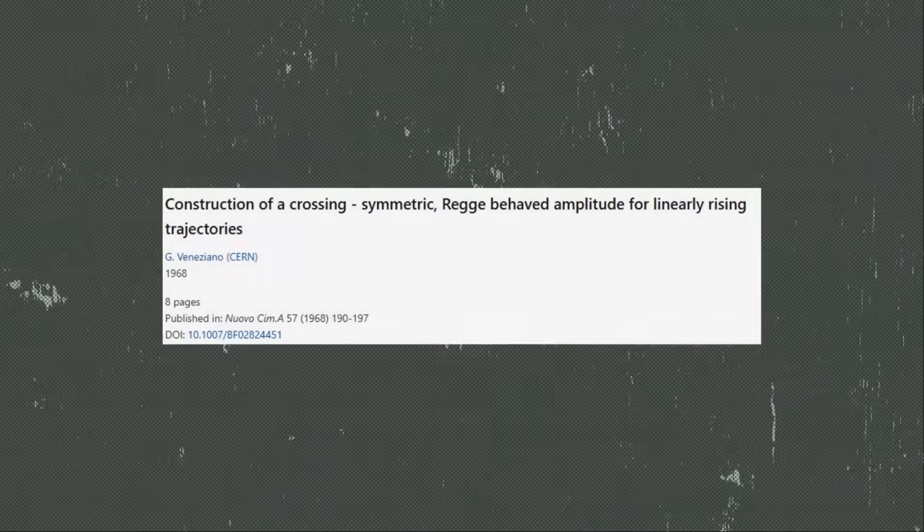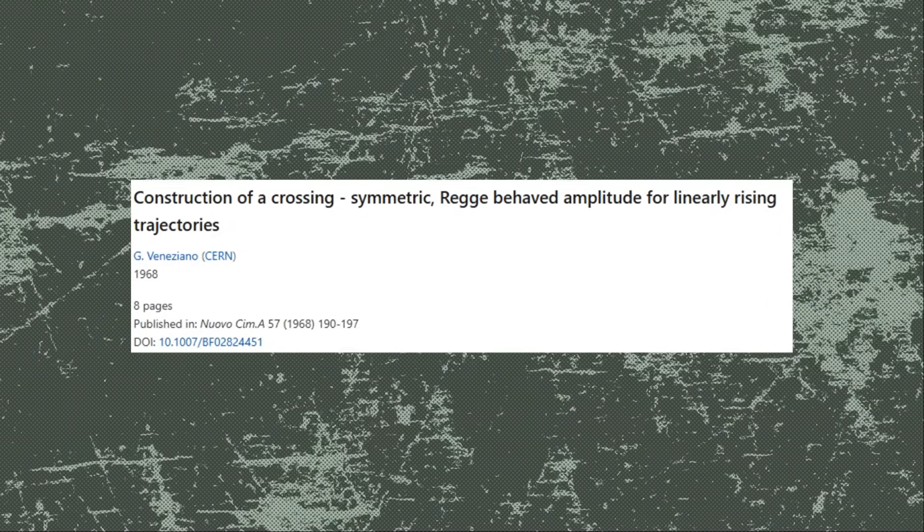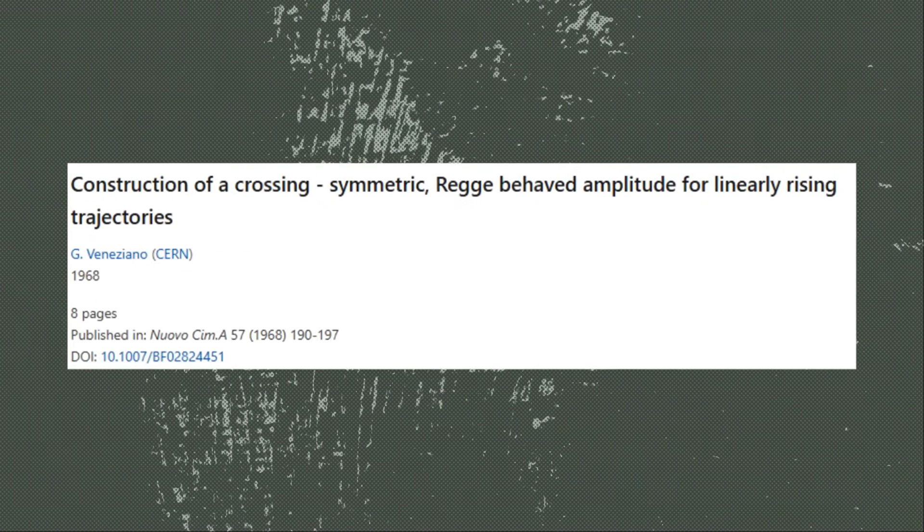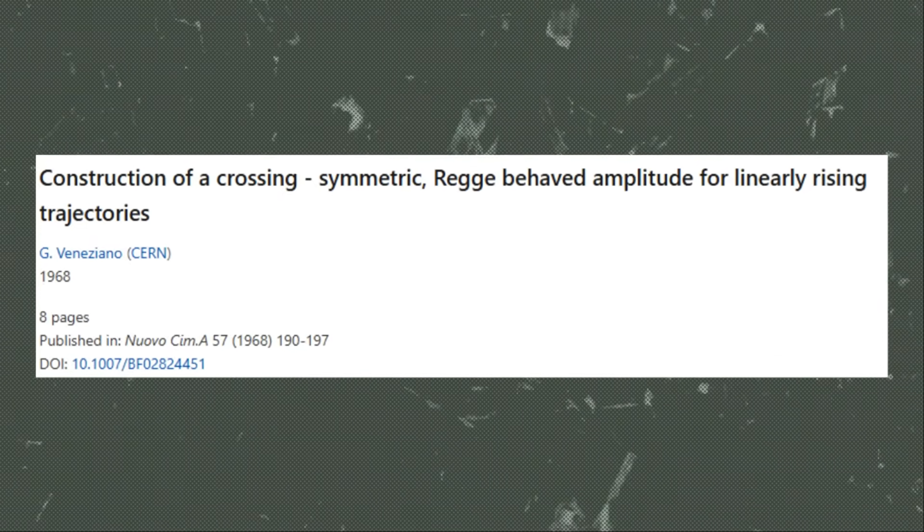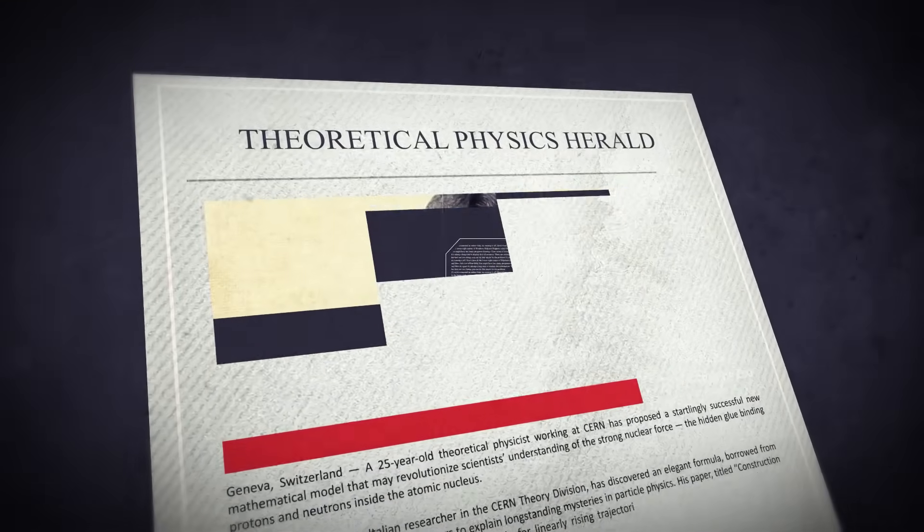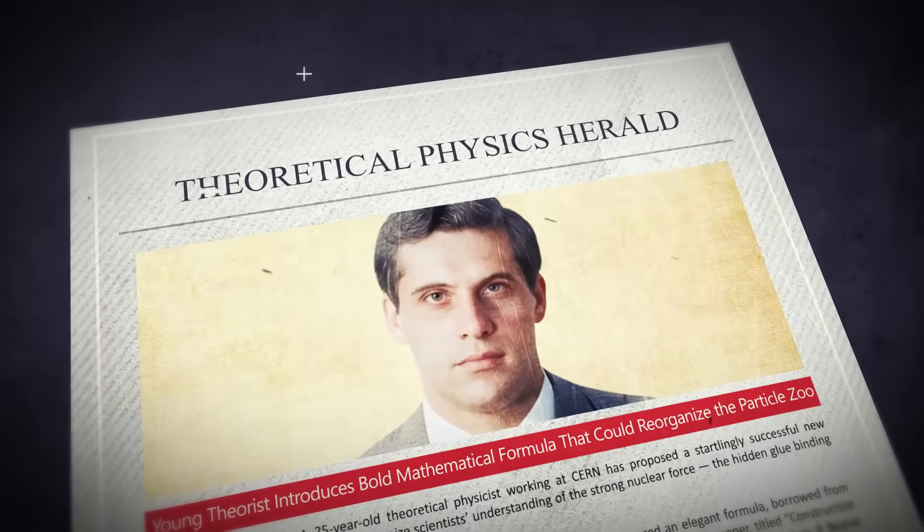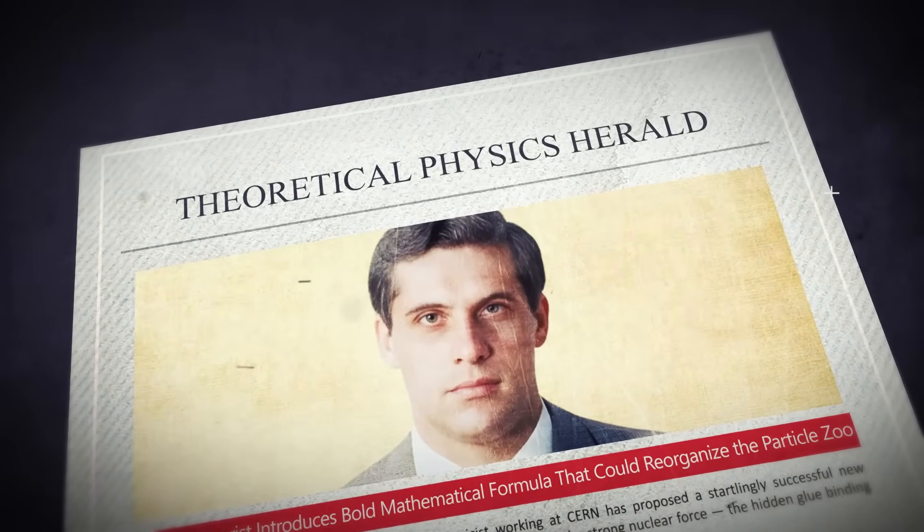The paper, published in July 1968, was titled modestly, Construction of a Crossing Symmetric, Rege-behaved Amplitude for Linearly Rising Trajectories. But to physicists, it was unlike anything they'd ever seen. An amplitude that wasn't just a fit. It explained something deeper. At first, no one knew what it meant. It seemed to come out of nowhere. Beautiful, mysterious, but detached from any physical picture. What was this amplitude really describing?